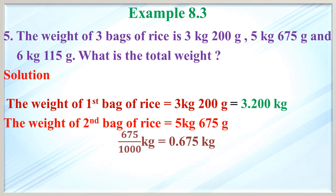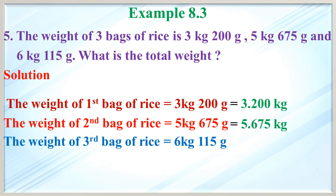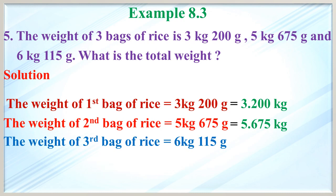So 675 divided by 1000 kg equals 0.675. The weight of the second bag in decimal is 5.675 kg. Then the weight of the third bag of rice is 6 kg 115 gram. Convert 115 gram to kilogram: 115 divided by 1000 kg equals 0.115 kg. Add with 6 kg to get 6.115 kg.